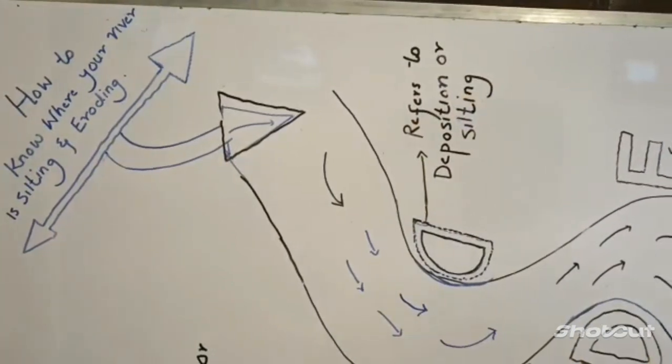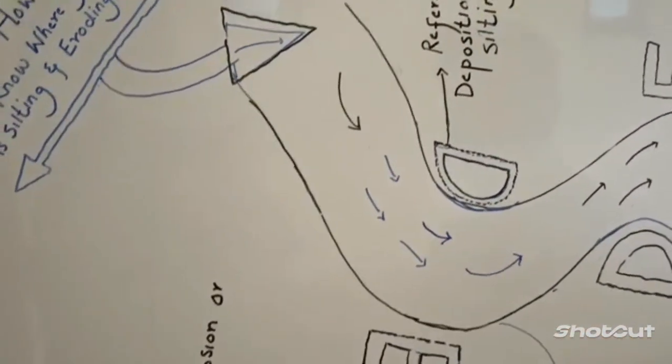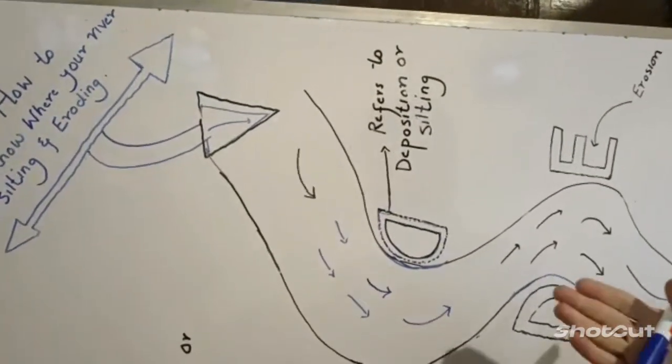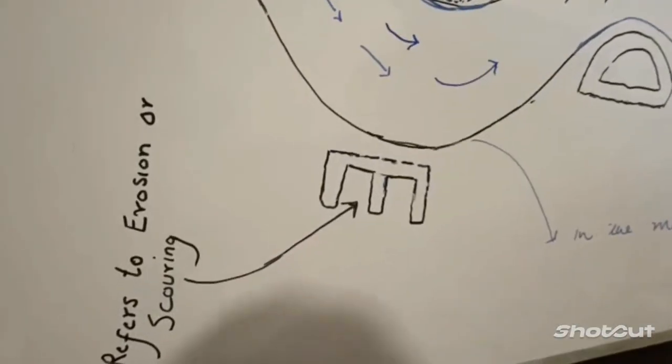The topic is how to know where your river is silting and where your river is eroding. Today we will try to understand which points in your river have full chances of erosion and which points have chances of deposition.